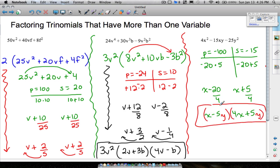If you were to FOIL that back out, x times 4x is 4x squared. x times 5y is plus 5xy and this is minus 20xy. So plus 5xy minus 20xy gives us that negative 15xy. And then negative 5y times positive 5y is negative 25y squared. So it does work out.